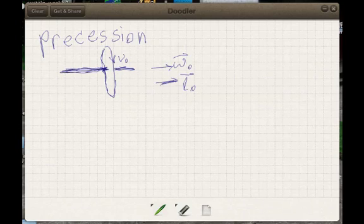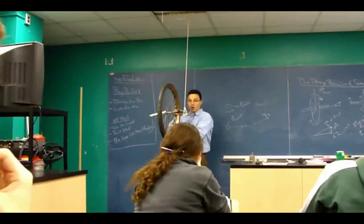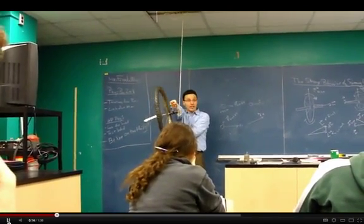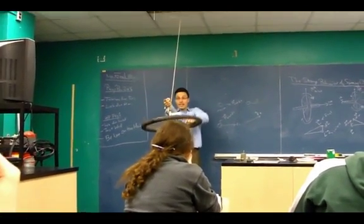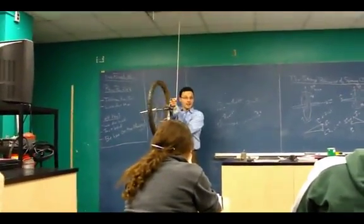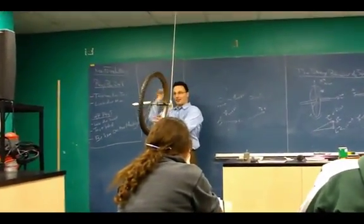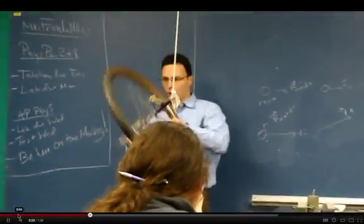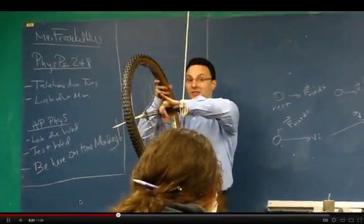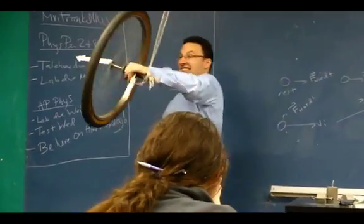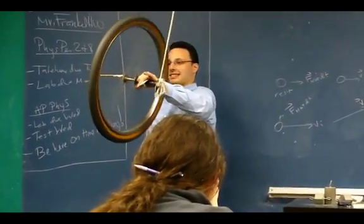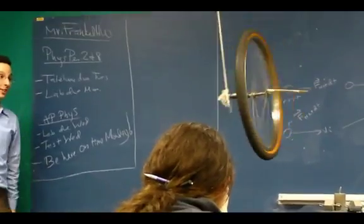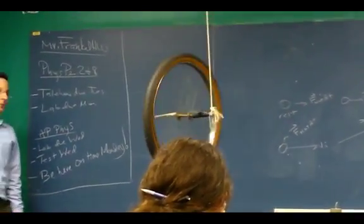Today we want to understand precession. What we want to understand is: when you let go of a bicycle wheel, gravity just pulls it down and it falls just like you'd expect. Why is it that when you spin the wheel and let it go, it doesn't fall, but actually precesses around in a circle like this?